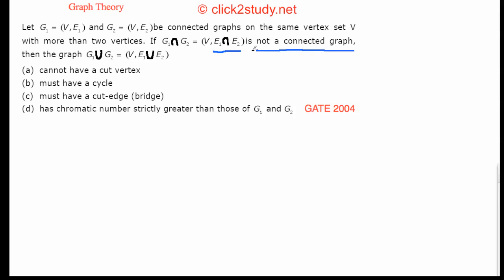You are given four options about G1 union G2, which is (V, E1 ∪ E2) — you take the union of edges to get the union of the graphs. The four options are: (A) cannot have a cut vertex, (B) must have a cycle, (C) must have a cut edge, (D) has chromatic number strictly greater than those of G1 and G2.